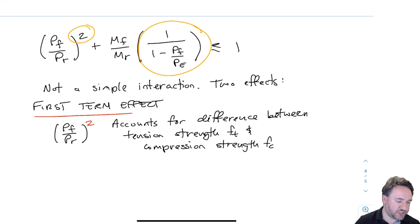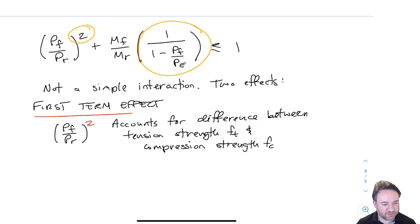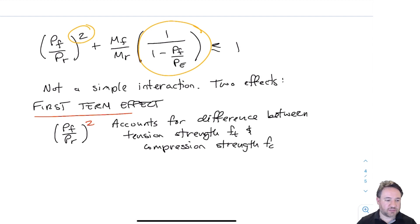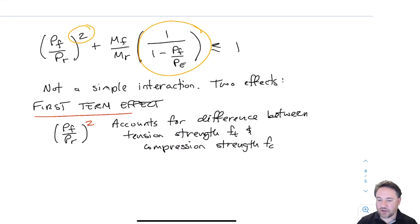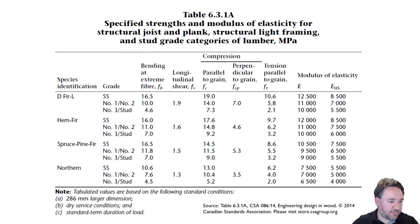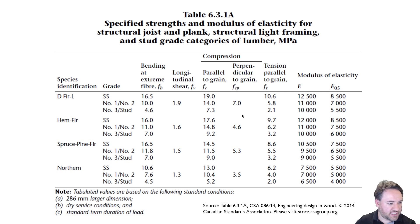The squared term accounts for the fact that FC and FT are not equal — FC is typically greater than FT. Compression strength is higher than tension strength in wood because imperfections like knots affect tension strength much more severely than compression strength. In tension, a knot creates a reduction in effective area; in compression, you're essentially just pushing on the knot. This is similar to concrete having different tensile and compressive strengths.